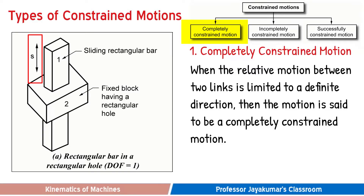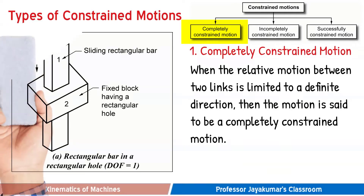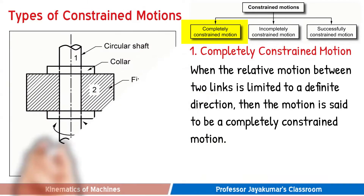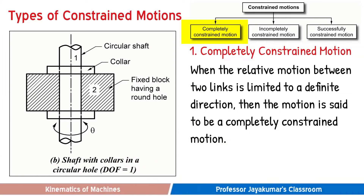In this case, link one can only slide. Now consider another example: a circular shaft with a collar, which is link one, can only rotate inside the round hole. It cannot translate. That means it results in motion in a definite direction. So this is also an example of completely constrained motion.